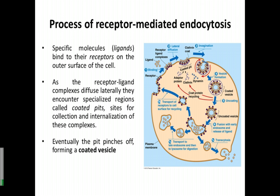The process of receptor-mediated endocytosis includes the presence of specific ligands that bind to the receptor. The ligand is a protein of interest that binds to the receptor, which is always present on the plasma membrane. These receptor-ligand complexes will diffuse laterally until they encounter a specialized region called the coated pit. This coated pit will eventually pinch off, forming a vesicle. The process then includes the uncoating of the outer layer, after which they can fuse with other proteins.